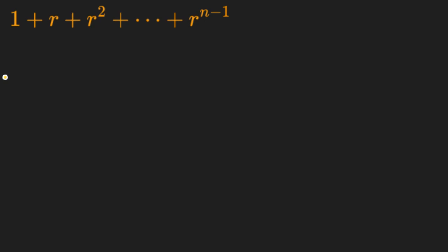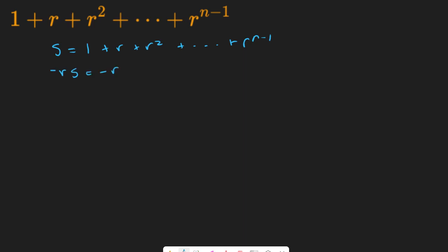One thing about geometric series and their sum is that we can actually find them by way of a formula. We can get that formula by essentially just treating this as: say we have S, and we have that this is going to be 1 plus r plus r squared plus, and this is going to be r to the n minus 1. Now if we multiply both sides by minus r, we have minus r minus r squared minus r cubed, and in actuality we're going to have minus r to the n.